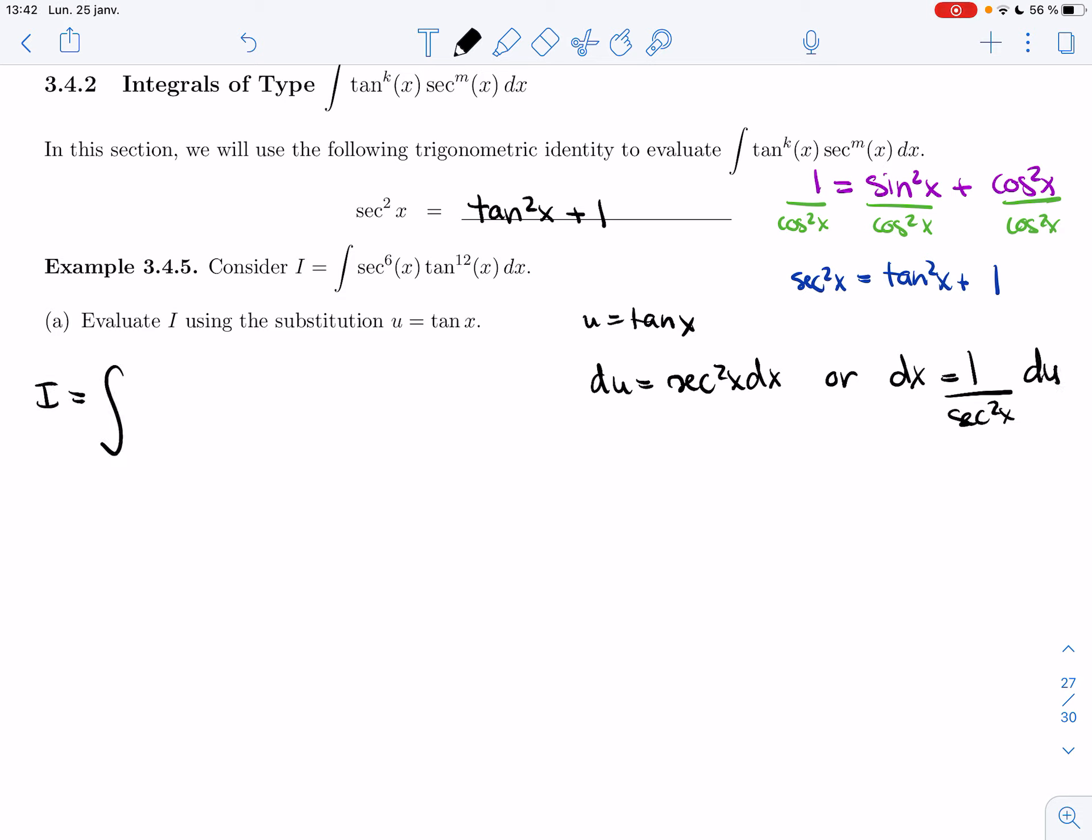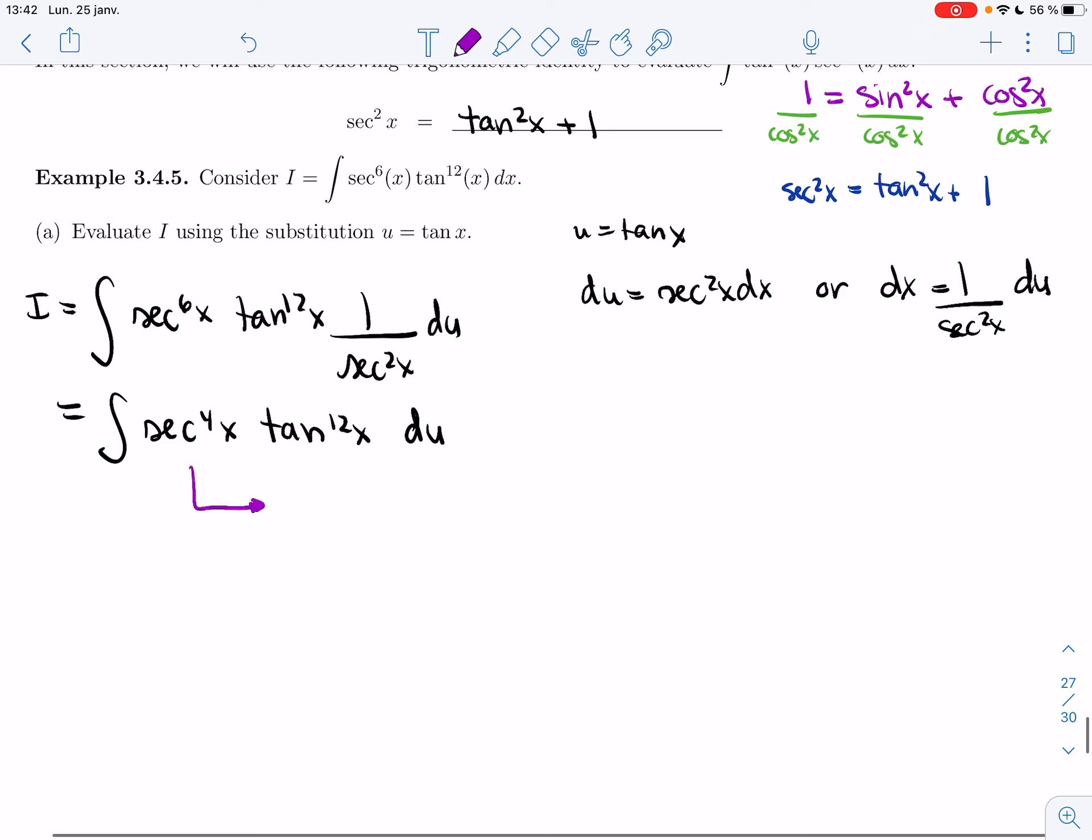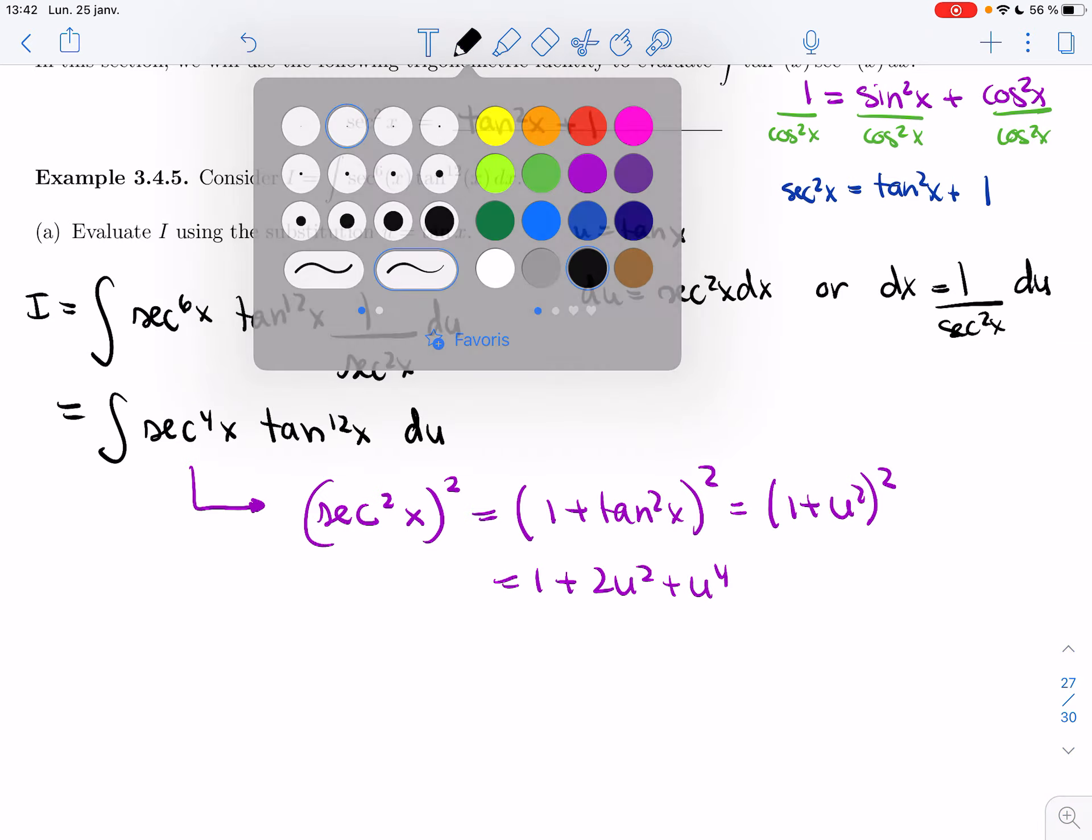Making that substitution will get rid of 2 of my secants and I'll be left with 4. It turns out that's the simplest interesting case. If you have just 2, it's simple. So here I need to rewrite everything in terms of tan. You know the drill. This part is easy, it's just u to the 12 and so I don't have to worry about it separately. This one's a bit harder. I'm gonna write it as secant squared squared. Secant squared is 1 plus tan squared from above, so you get 1 plus u squared squared, and then you get 1 plus 2u squared plus u to the 4, and you plug that into your integral.